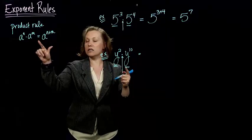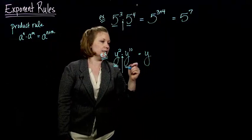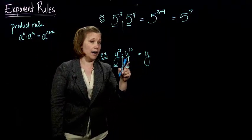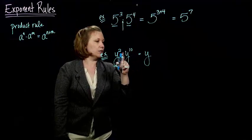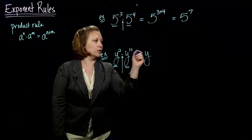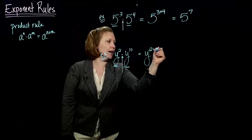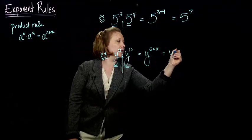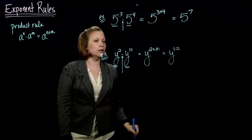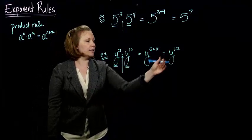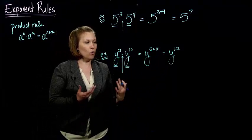So that means according to my product rule, this is the same thing as the y, the same base, raised to what power? Well, the 2 plus the 10, which gives me y to the 12. So y to the 2nd times y to the 10th is the same thing as y to the 12th.